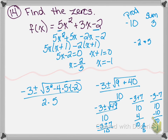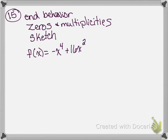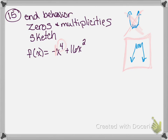Number 15 says: determine the end behavior and the zeros and their multiplicities of f of x equals negative x to the fourth plus 16x squared, then sketch the graph. Because this is raised to the fourth power, an even power, the graph is either going to open up on both ends or down on both ends. Because there's a negative in front of that x to the fourth, we know it's going to open to the bottom — the end behavior is that it opens down.